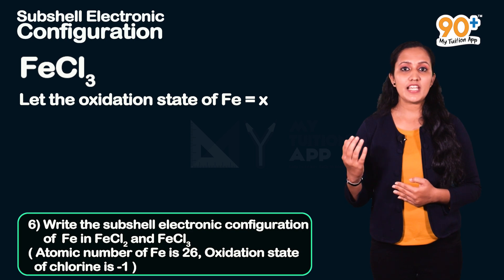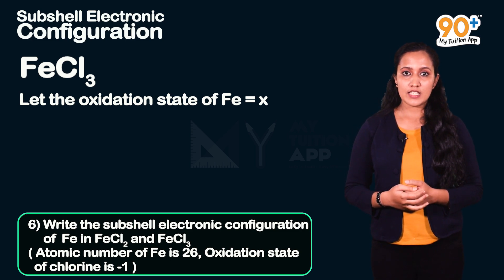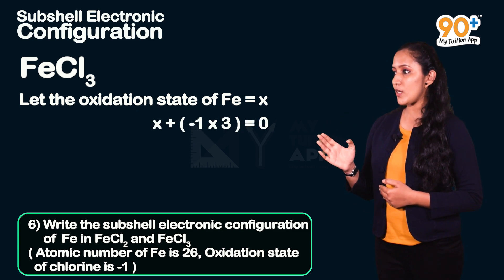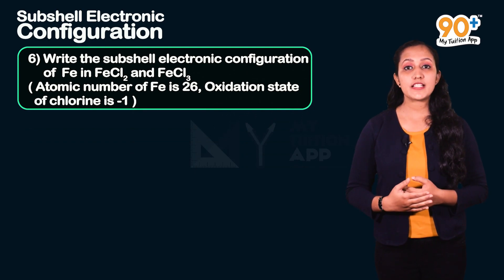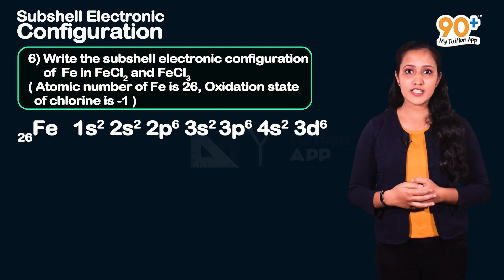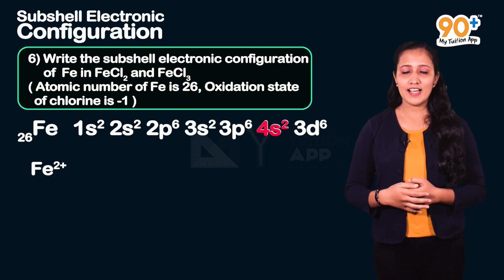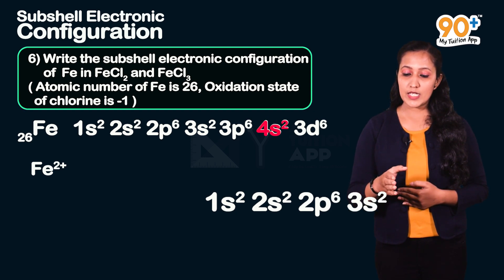Now consider FeCl₃. Let the oxidation state of iron be x. Since there are 3 chlorine atoms, x + (−1)(3) = 0, so x = +3. Iron in FeCl₃ is Fe³⁺. For Fe²⁺, we remove 2 electrons from the outermost shell (4s). The subshell electronic configuration of Fe²⁺ is: 1s², 2s², 2p⁶, 3s², 3p⁶, 3d⁶.